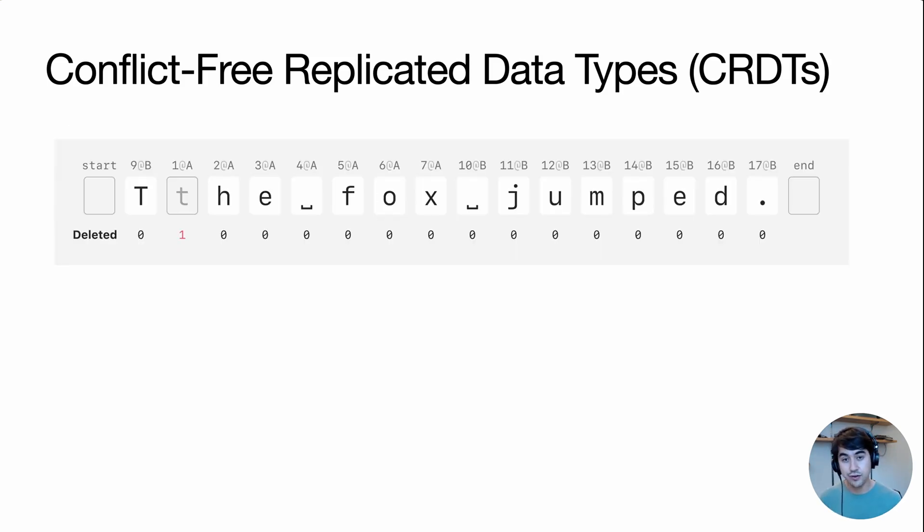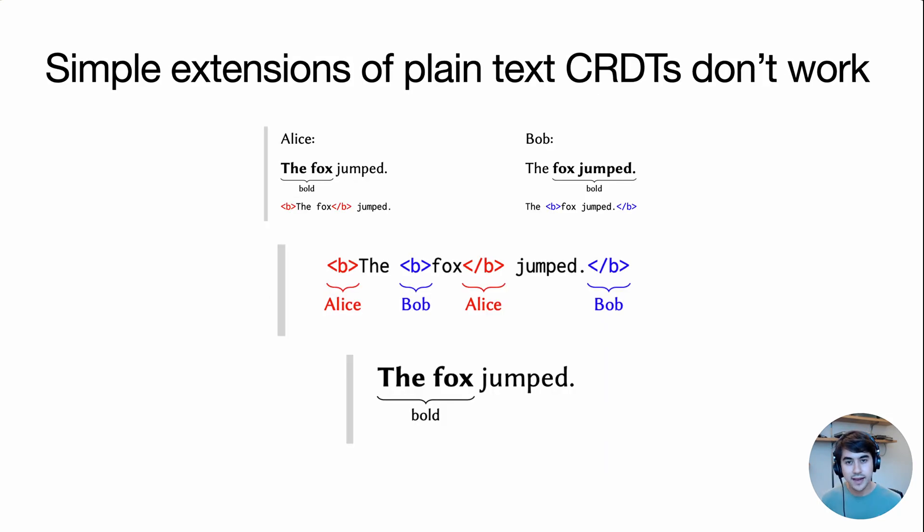Let's take a look at how CRDTs for plain text sequences work. Typically they assign IDs to individual characters in the sequence, like these shown here. And then our operations for inserting characters happen relative to those IDs. For example, if you want to insert the letter X here, instead of giving a numeric insertion index, we say after this ID. Another key idea is that instead of deleting characters entirely from the sequence, we can use tombstone flags to model deletions.